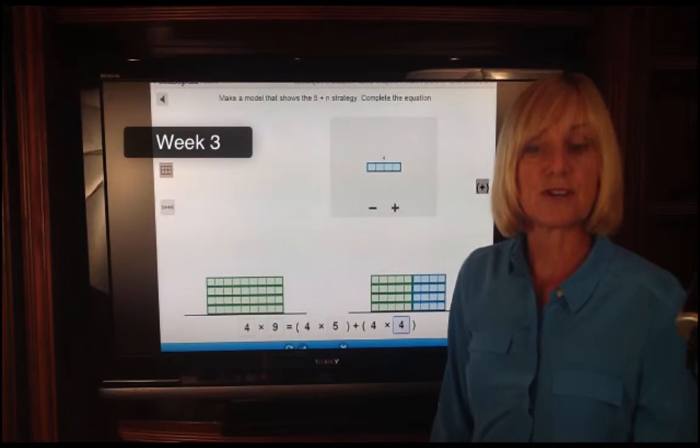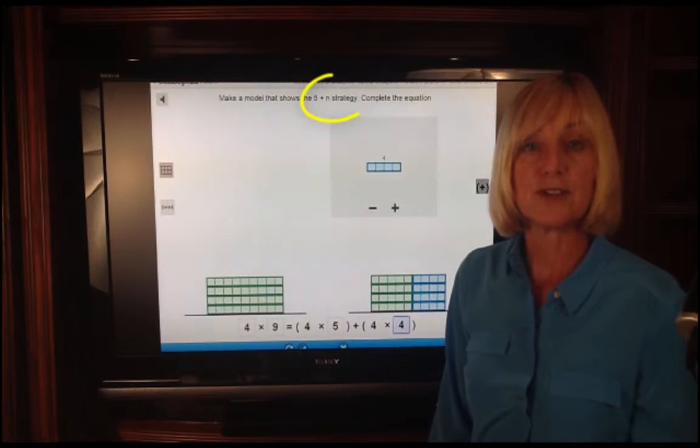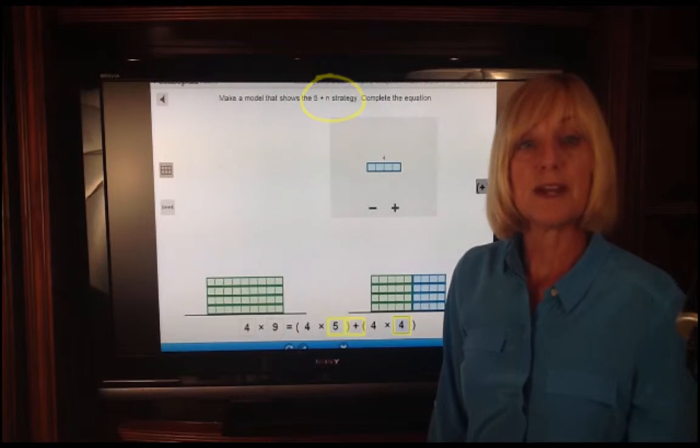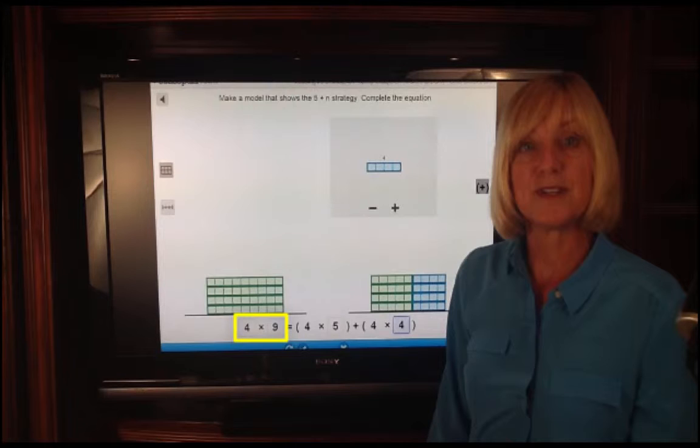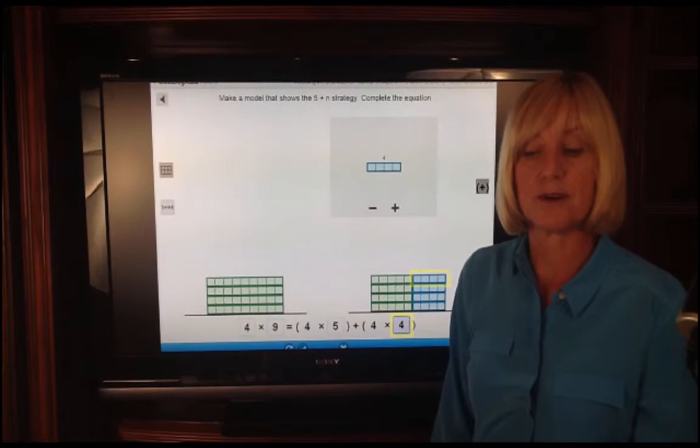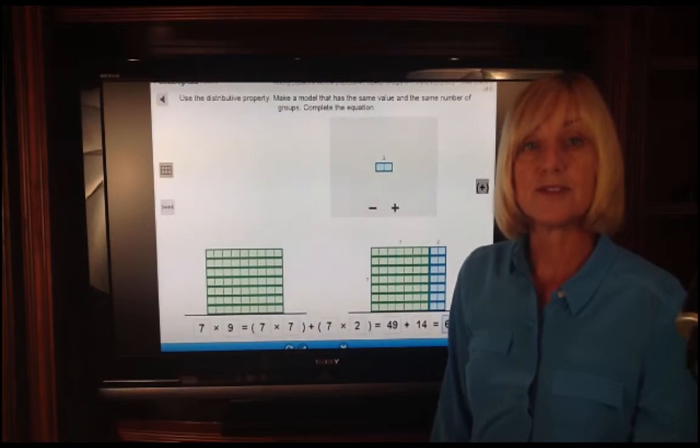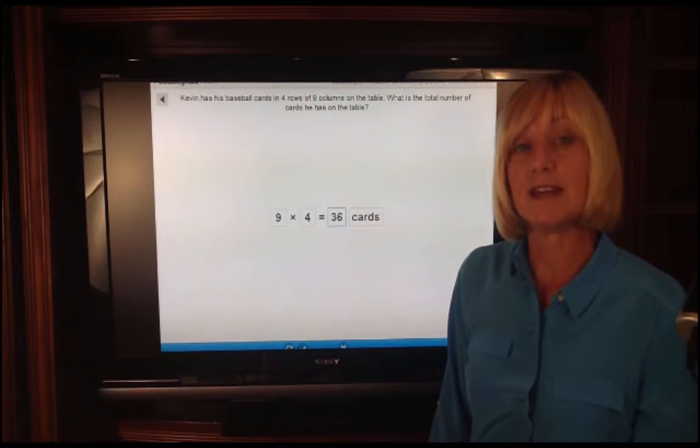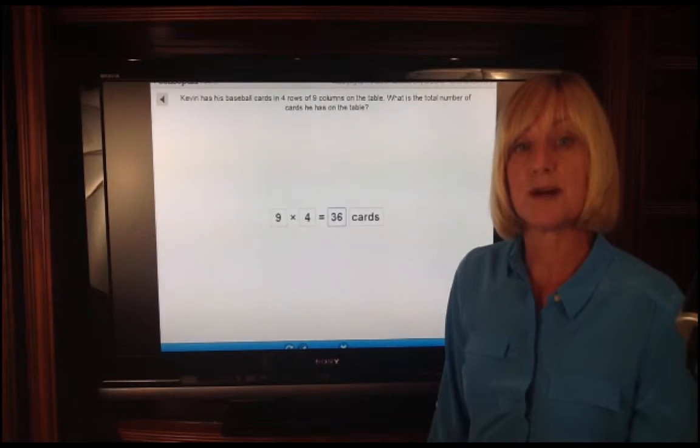In the third week of instruction, students are introduced to the five plus n strategy. So a student might have four plus nine. And they have to fill in and create a model that is two parts, but one part must be groups of five. So here, four times five plus four times four. The same process is used where they first fill in the parentheses that represent the model parts that they create. Then they put in the partial product. Finally, the product. And at the end of that third week, they are doing numbers only, with and without word problems.